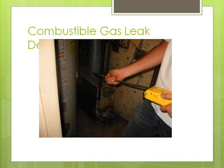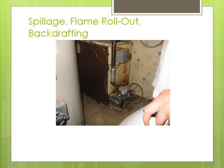Next slide: combustion gas leak detection. This is the unit — you just run it along the gas pipes and it beeps if you have a gas leak. For spillage, flame rollout, and backdrafting — you can see the burnt area at the bottom of what may be a boiler. If you look at your hot water heater at home and it looks burnt around where the flame is, then you've got problems with depressurization around that room and you should take care of that.